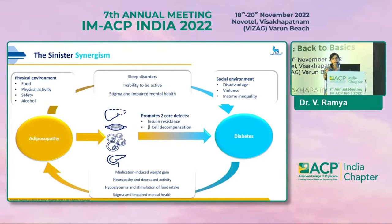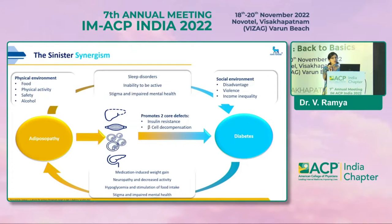The physical environmental factors include poor dietary patterns and lack of physical activity. Social environment factors include income inequality, low socioeconomic status, and mental health issues like sleep disorders. All this leads to adiposity, which at the level of liver, muscle, and adipose tissue causes insulin resistance and thereby beta cell decompensation leading to diabetes. In turn, diabetes medications and oral diabetic drugs cause weight gain, neuropathy, lack of physical activity, and recurrent hypoglycemia leading to increased food intake — so both conditions are interrelated in many ways.